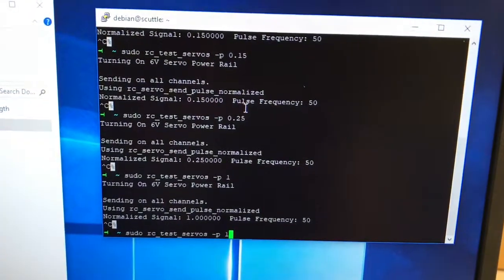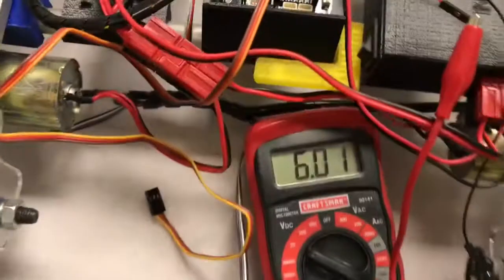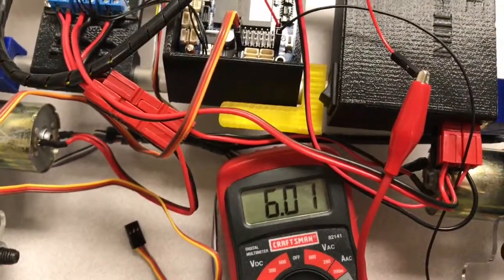Now I'm going to tell the servos on all channels to go to one. This one's moving. I'm getting six volts, so it must be enabled.